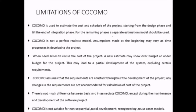Limitations of COCOMO: it estimates cost and schedule only from the design phase through the integration phase; for remaining phases, a separate estimation model must be used. COCOMO is not a perfectly realistic model — assumptions made at the beginning may change during development, and revised cost estimates may show over- or under-budget results, potentially leading to partial development excluding certain requirements. COCOMO assumes requirements are constant throughout development; any changes are not accommodated in cost calculations.